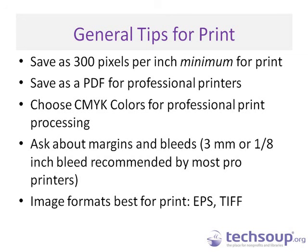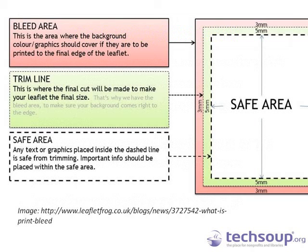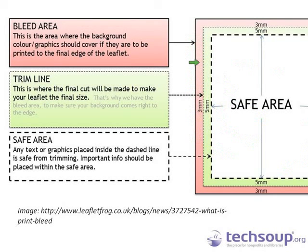Image formats best for print are EPS and TIFF. If you're not sure what a bleed is: if you have a postcard and want your image to stretch all the way across the front with no white edge, you need a bleed that goes off the page so that when those postcards are cut there is no white showing up. Three millimeters is recommended. In this image, the safe area in the white is where you want your important text and information. The green area is where your postcard would be cut, and the bleed continues beyond that.